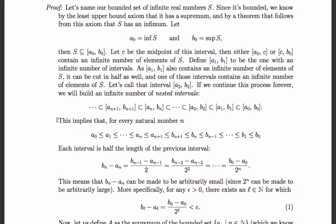For every natural number n, a_0 ≤ a_1 ≤ a_2 ≤ ... ≤ a_n ≤ a_{n+1} ≤ ... ≤ b_{n+1} ≤ b_n ≤ ... ≤ b_1 ≤ b_0. This sequence of inequalities follows from the fact that our intervals are nested — each interval is half the previous interval — and each of these intervals contains an infinite number of elements of S.